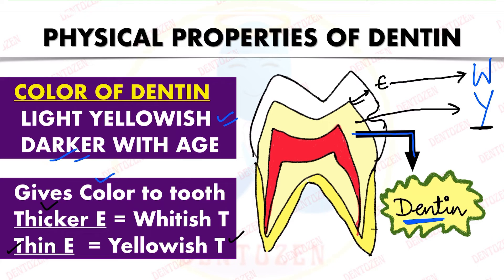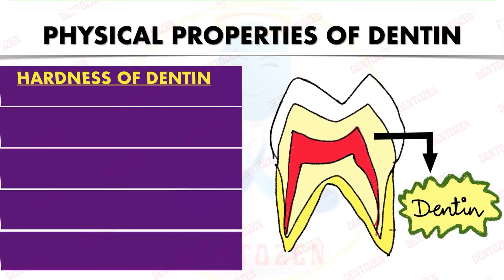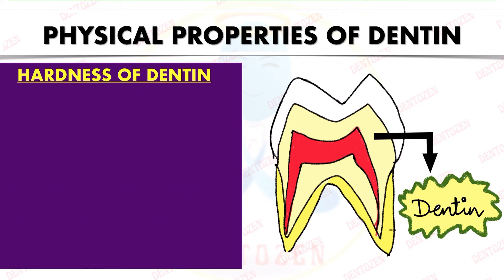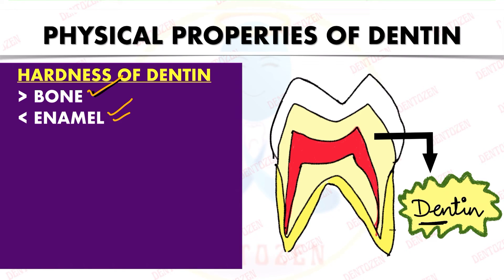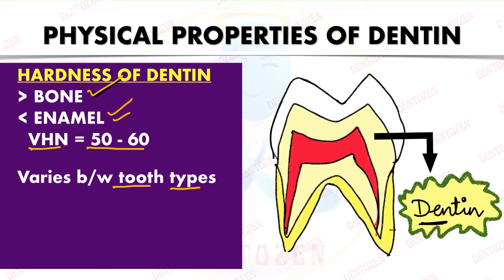Dentine has more mineral content than bone, so its hardness is greater than bone but less than enamel. Its Vickers hardness number is 50 to 60. Hardness also varies between different types of teeth — incisors, canines, and premolars — and varies in different parts of the tooth, such as the crown versus the root.